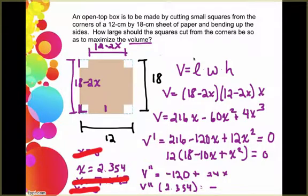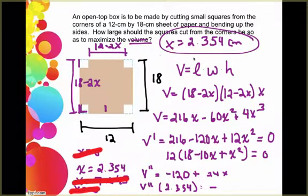So then if I want to maximize the volume, then I need to let x, the side of the square, be 2.354 centimeters. And that will give me a box that has the maximum volume.